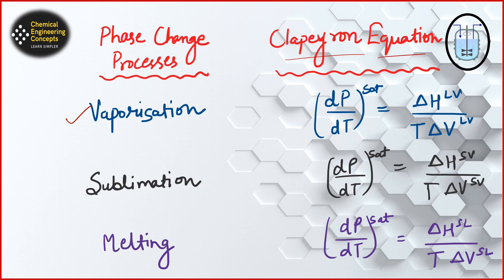For different phase change operations, we have different forms of the Clapeyron equation. For vaporization, we have liquid to vapor changes; for sublimation, we have solid to vapor changes; and for the melting process, we have solid to liquid changes. These are the Clapeyron equations to use for the respective phase change operations in your numericals.